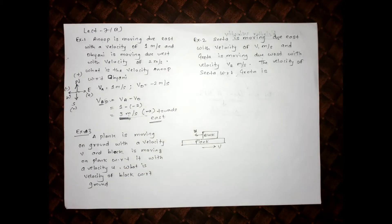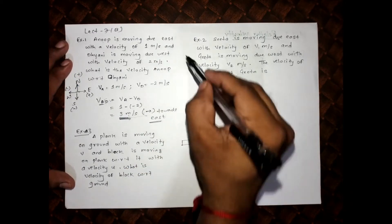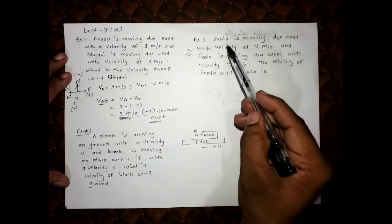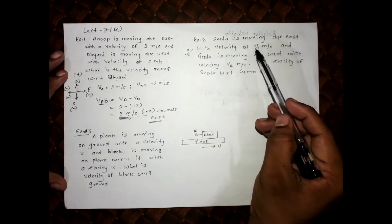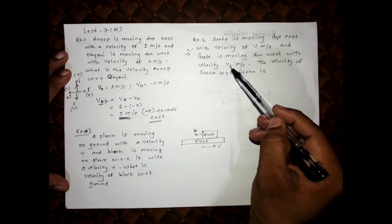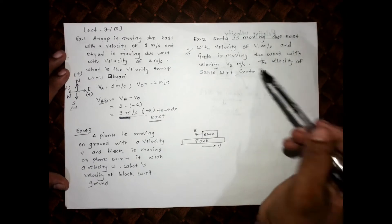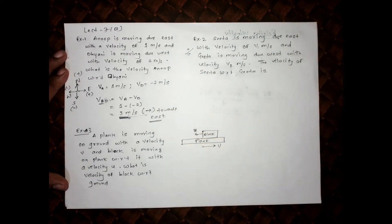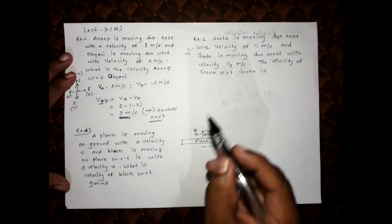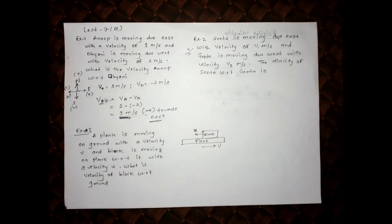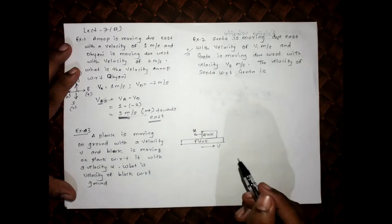Example 2: Sita is moving with velocity V1 towards west, Geetha is moving with velocity V2 towards east — same type of problem, you can solve it directly. Now let's solve the third sum: a plank is moving on the ground with a velocity V.